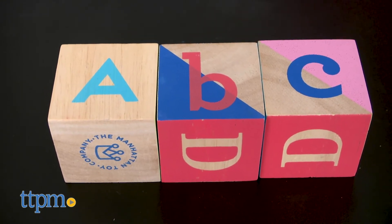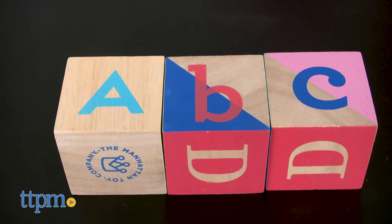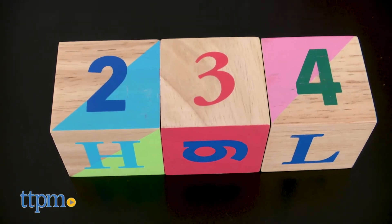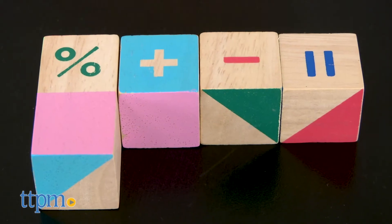The imagery on the blocks varies but includes all 26 letters of the alphabet, including extra vowels, the numbers 0 to 9, basic math and grammar symbols, and colorful shapes.